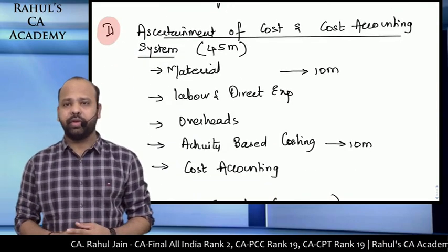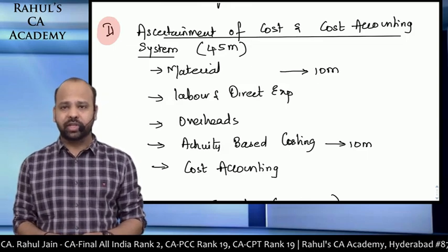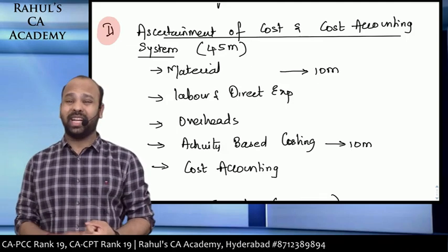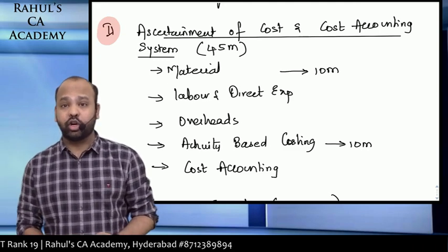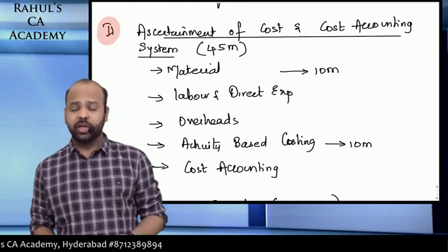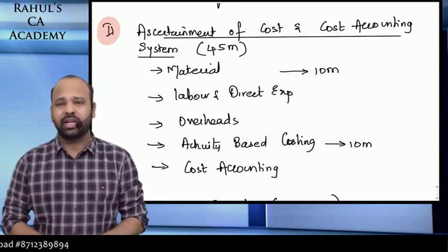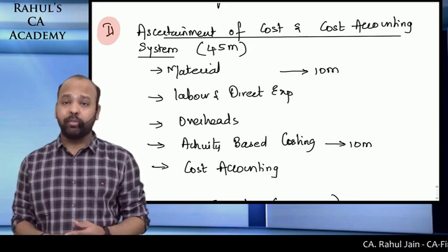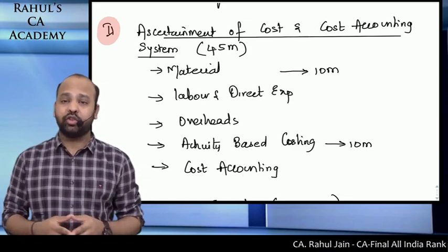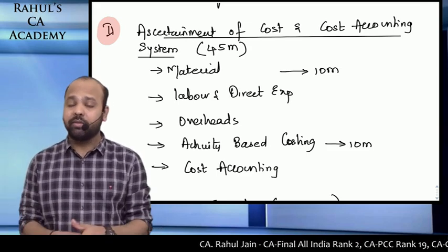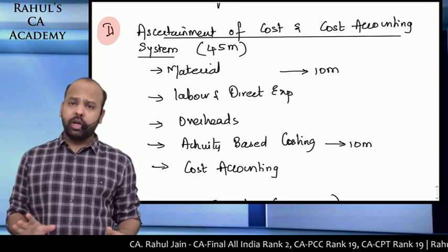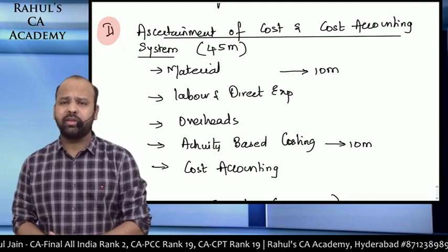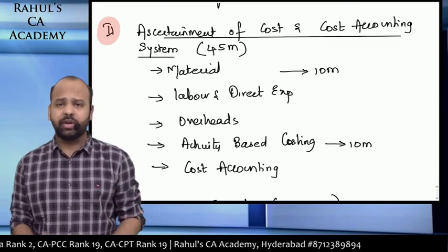The second part is Ascertainment of Cost and Cost Accounting System, which will fetch 45 marks in the examination. It includes materials, labor, direct expenses, overheads, activity-based costing, and cost accounting systems. In every attempt, there has been a question for 10 marks from activity-based costing, so mark this as very important. Material has also been asked for an average of 10 marks. Normally, there will be one question from each topic — material, labor, overheads, and cost accounting system.